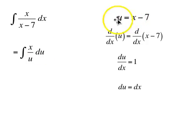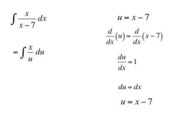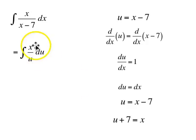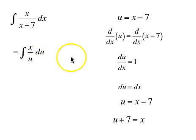If we look at the first line, u is x minus 7, and we can certainly solve for x. Adding 7 to both sides gives u plus 7 equals x. So making that substitution, instead of x we use u plus 7, giving us the antiderivative of u plus 7 over u du.